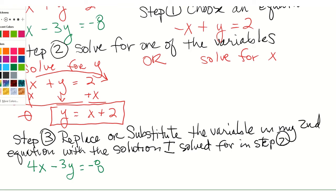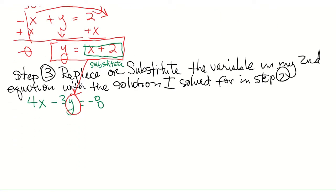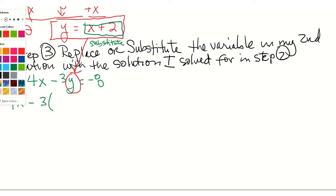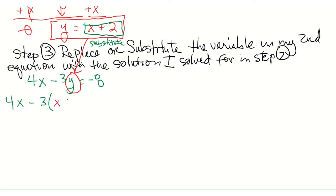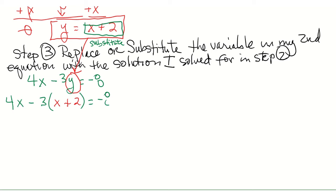Now what I'm going to do is take this y right here and substitute the solution I just solved for in step two into my equation. So my equation is going to be 4x minus three, and then instead of writing down the y, I'm going to plug in the solution I got in step two for my y. Now if you'll notice, I just have x's in my equation, so now I can finish solving to get a value for my x.